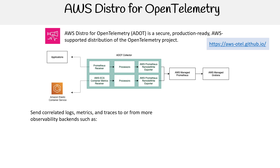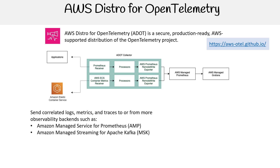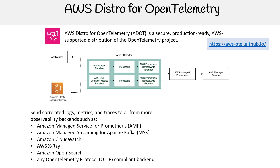Send correlated logs, metrics, and traces to or from observable backends such as Amazon Managed Service for Prometheus, Amazon Managed Streaming for Apache Kafka, Amazon CloudWatch, AWS X-Ray, Amazon OpenSearch, and any OpenTelemetry protocol compliant backend.